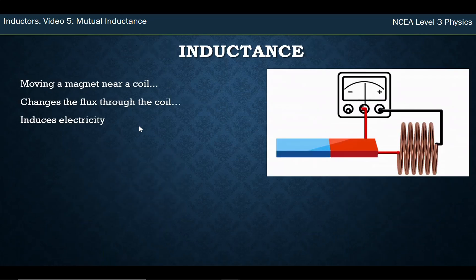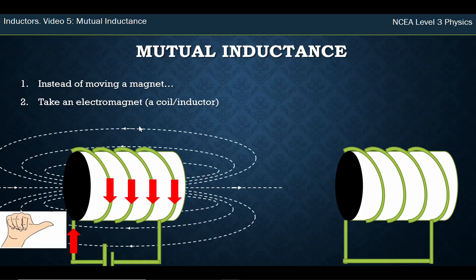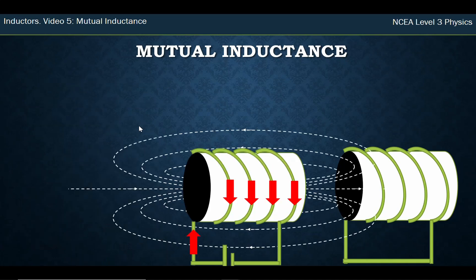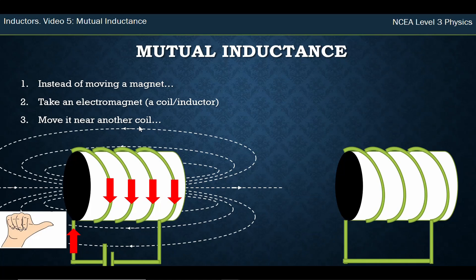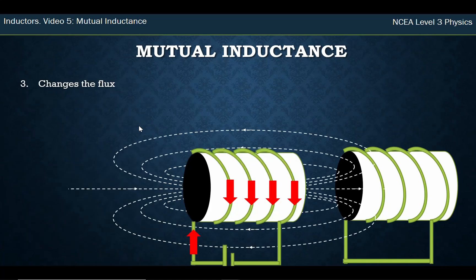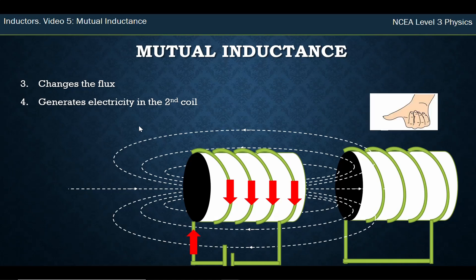Last time we had a magnet moving close to the coil. Now I'm going to be looking at instead of a magnet, a magnetic field from another coil. I move that close to another empty coil, and I've gone from no flux to some flux. I've changed the flux. Remember, changing flux induces electricity. This changing flux generates electricity in the second coil.